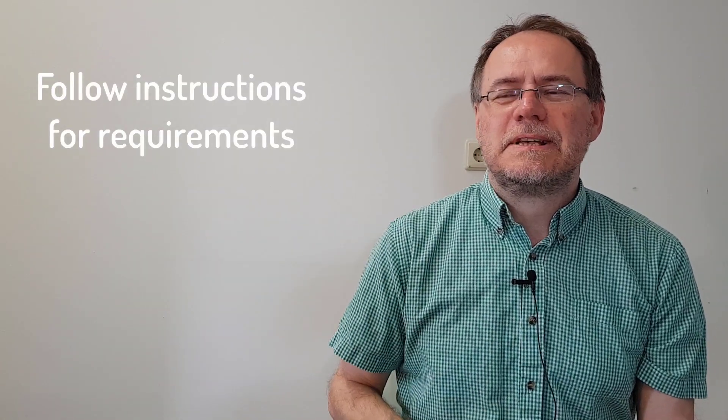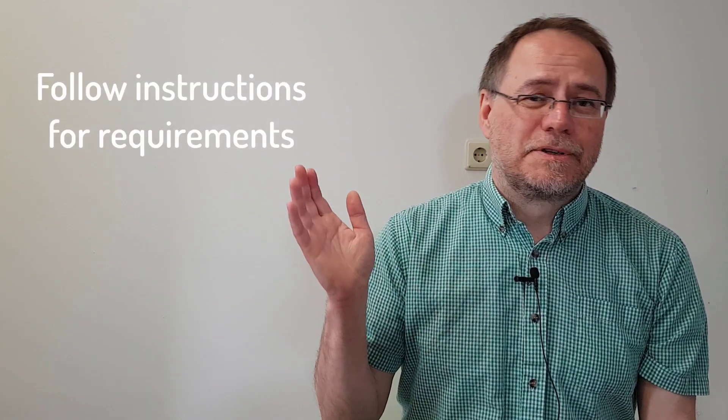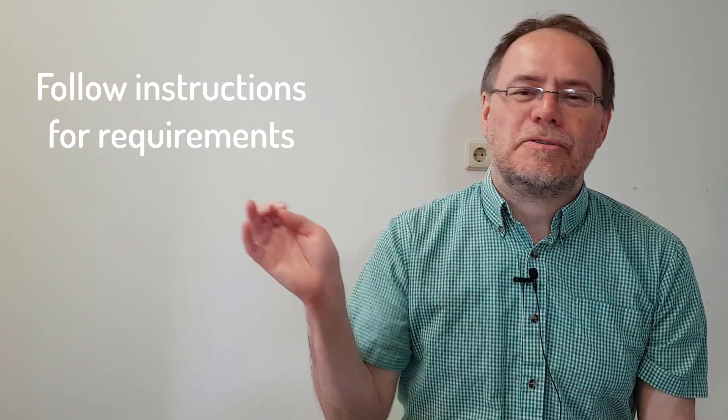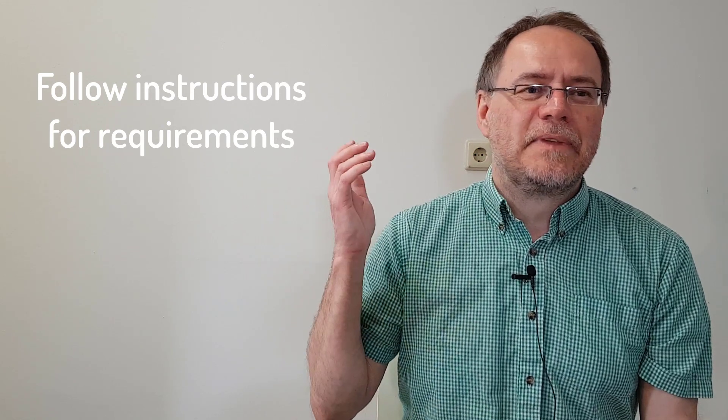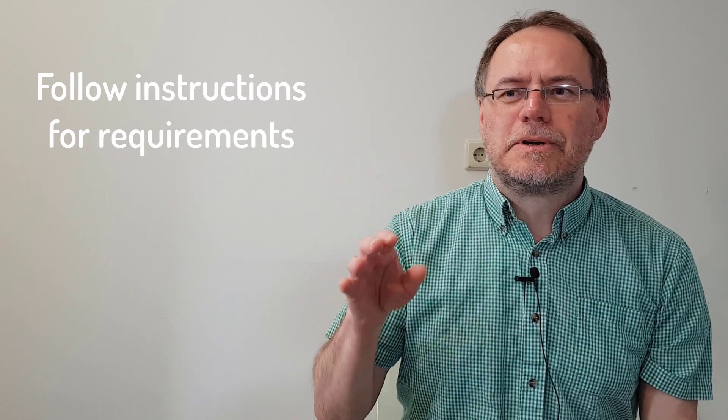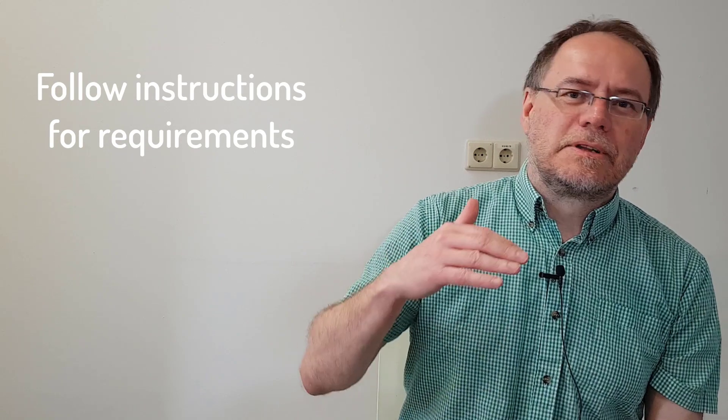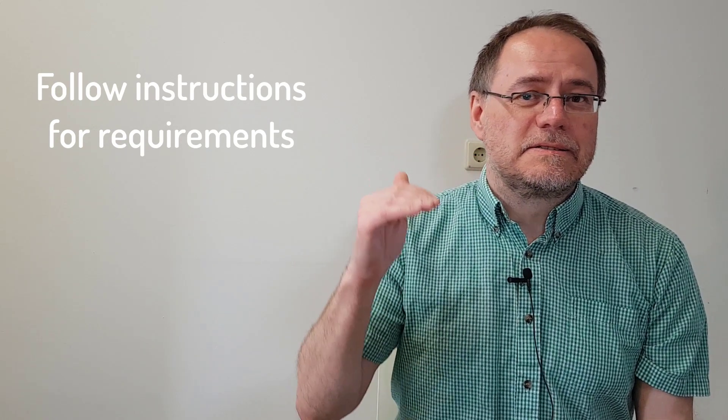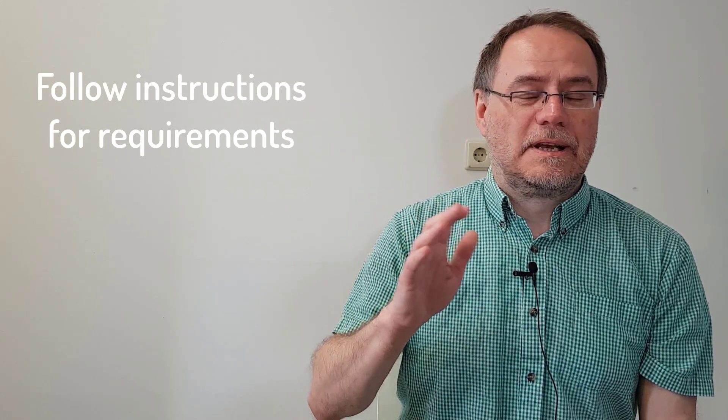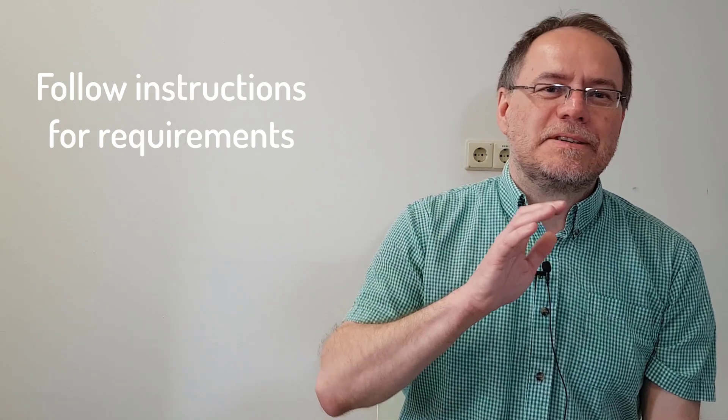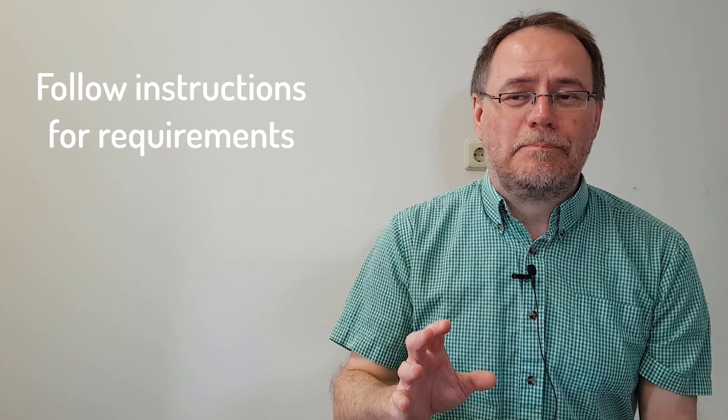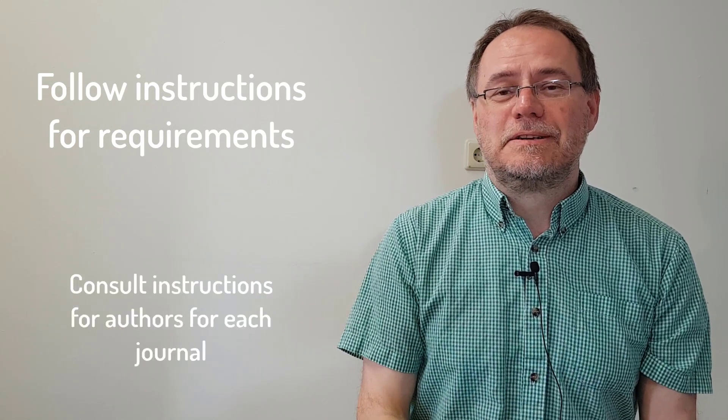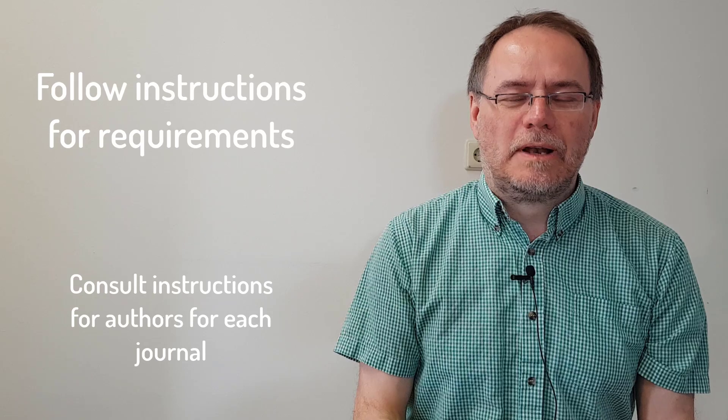The second point is follow the instructions. Every journal, unfortunately this is the way it is, has its own set of instructions for all kinds of the manuscript, and that includes the abstract. Some journals impose pretty strict word limits on the abstract. Some journals want the abstract to be divided in certain subsections. Some journals say never divide the abstract into subsections. So to make sure that you are getting it into the right form, make sure you very carefully check the instructions for the authors, just because it will vary quite widely from journal to journal.